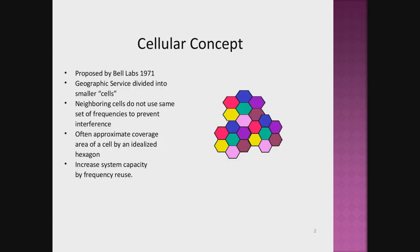Later on, the cellular concept was a major breakthrough in solving the problem of user capacity. It offers very high capacity in a limited spectrum. The cellular concept was proposed by Bell Labs in 1971.